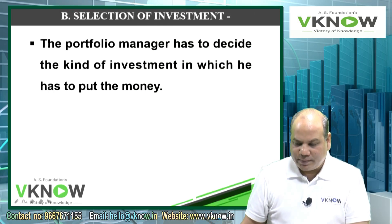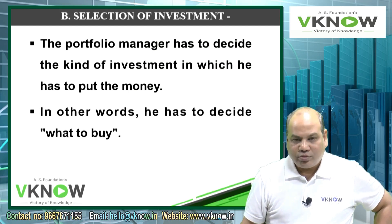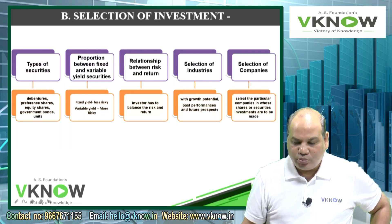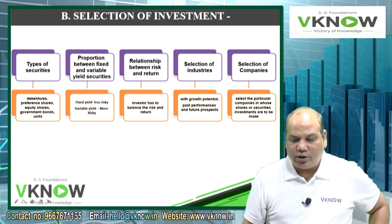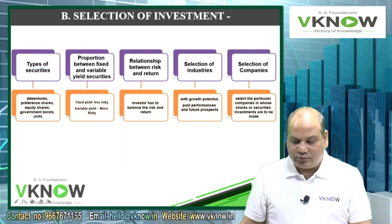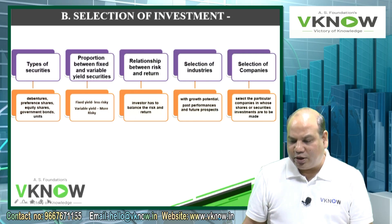Next is selection of securities. The portfolio manager has to decide the kind of investment in which to put the money. Once your objective is clear, the next task is where to invest and what to buy. Your selection depends on types of securities available — debentures, preference shares, equity shares, government bonds, mutual fund units. According to your objective, you select the type of security. According to your risk-taking ability, you decide the proportion between fixed and variable yield securities. Fixed yield securities are less risky but give less return; variable yield securities are more risky but offer high return. You then compare relative risk and return of stocks and try to balance between risk and return.